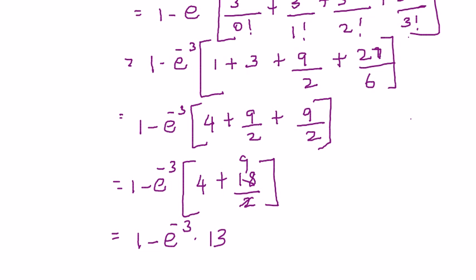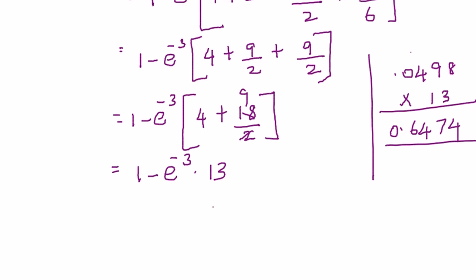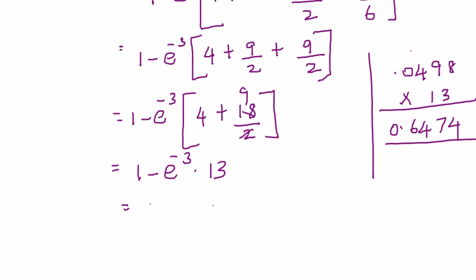So, and you know that the value of e power minus 3 is 0.0498. That you multiply with 13, you will get 0.6474, right. I just get it in the rough column here. So, 1 minus 0.6474.